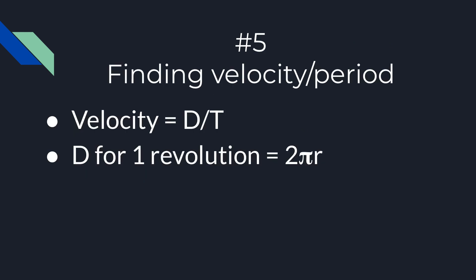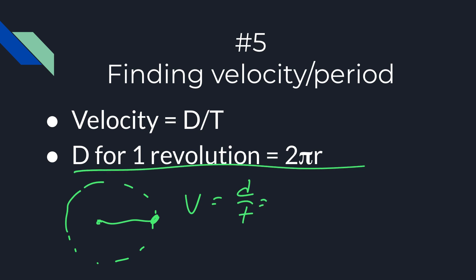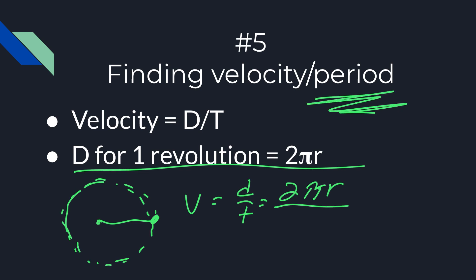If you have a mass going around in a circle and they want to know the velocity, just remember velocity is distance over time. For one full revolution you're going a circumference, so 2πr is the total distance. The time it takes is the period — the time for one full revolution. So the velocity is 2πr divided by T.